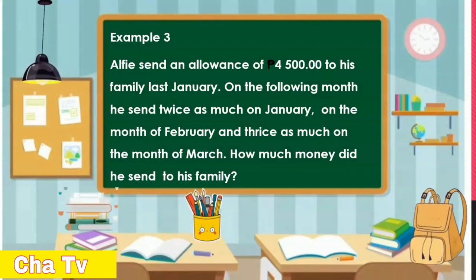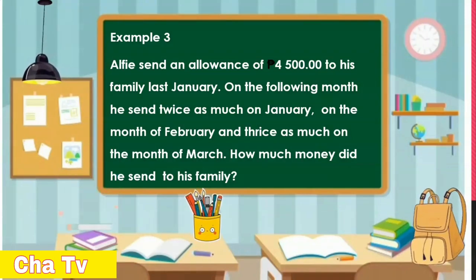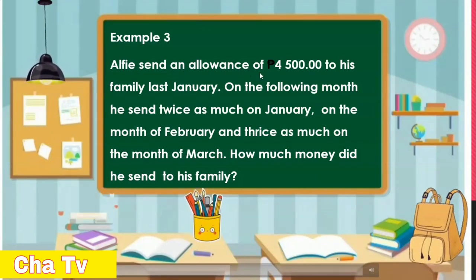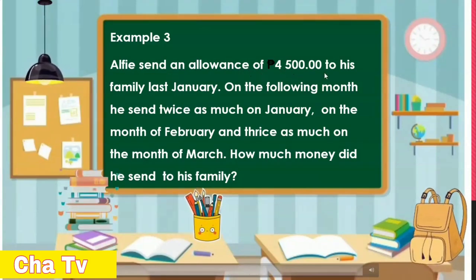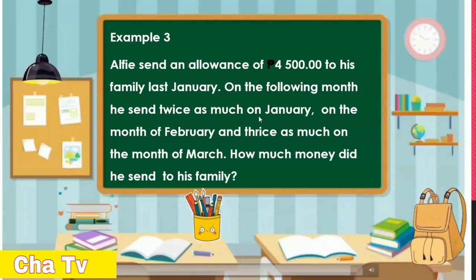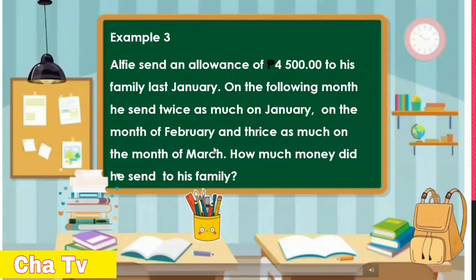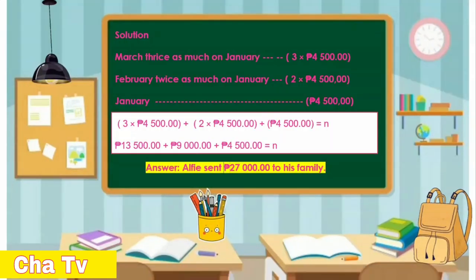Another example. Alfie sent an allowance of 4,500 pesos to his family last January. The following month he sent twice as much as January. The month of March he sent twice as much as the month of February. How much money did he send to his family?